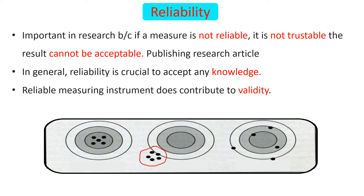Let's look at three scenarios. If we consider these dots as scores, in the first case the dots are close to each other, so it is consistent and reliable, and they are found in the inner circle, so it is accurate. We can say it is both reliable and valid.